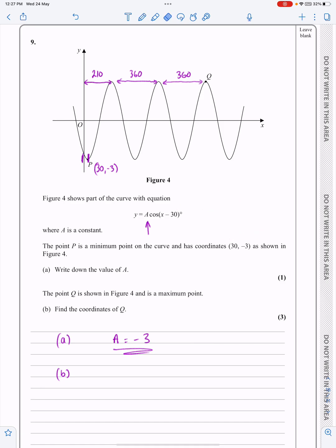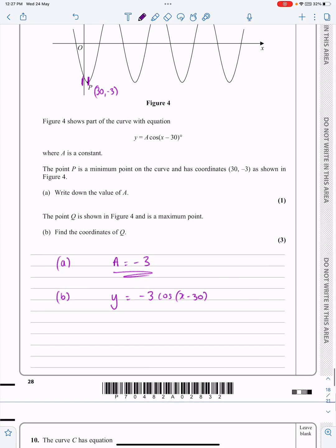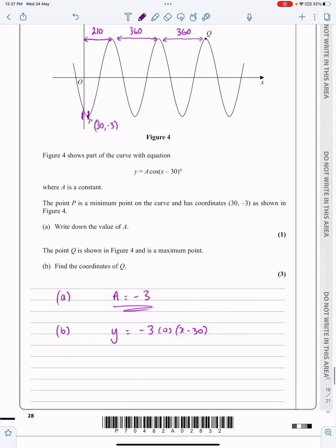Okay, so now let's look at the question for part B. Part B says, can we find the coordinates of Q over there? Well, remember now, I've got that my function is minus 3 cos x minus 30. And if I'm trying to work out what Q is, the x value for Q is going to be 210 plus 360 plus 360. So, I think that's 930 there.